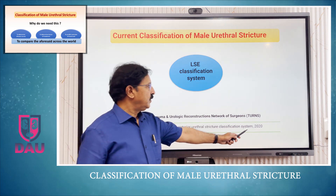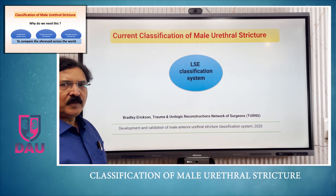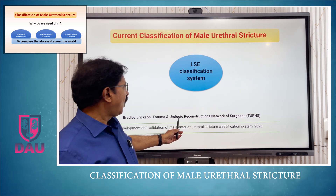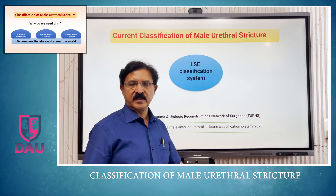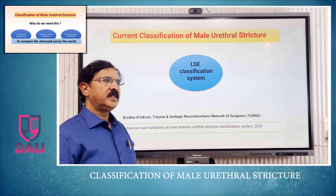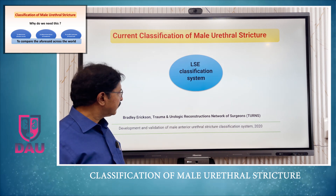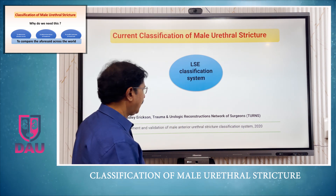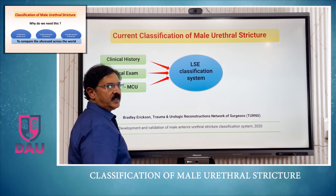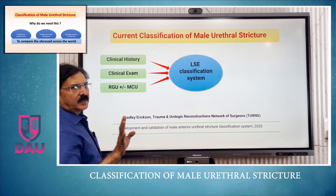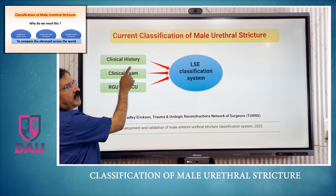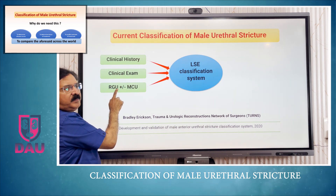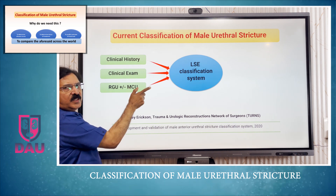In the year 2020, a group of urological surgeons formed a group called the Trauma and Urologic Reconstruction Network of Surgeons (TURNS) and published a classification known as the LSE classification system. This classification utilizes three clinical methods: the clinical history, clinical examination, and retrograde urethrogram with or without voiding cystourethrogram.